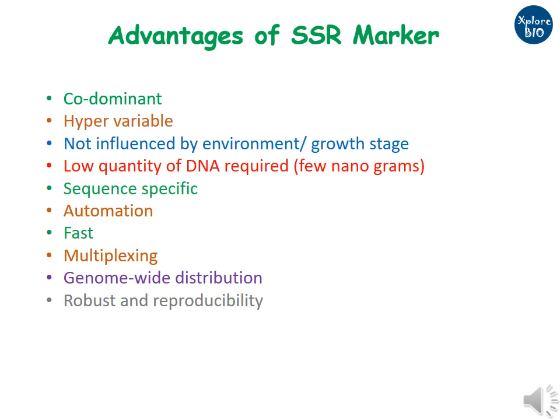Advantages of SSRs as markers: SSRs are co-dominant, meaning they can distinguish between homozygous and heterozygous individuals. They are hyper-variable, showing a high degree of polymorphism. SSRs are stable and results are not influenced by environment or developmental stage. Even 50 nanograms of DNA is sufficient for the study. SSR markers are sequence-specific, amplifying a specific DNA region, and can be automated using Sanger sequencing. SSR assay is fast, and multiple markers can be checked in a single reaction, making them well suited for multiplexing. Their occurrence in the genome is random, and they produce reproducible and reliable results.